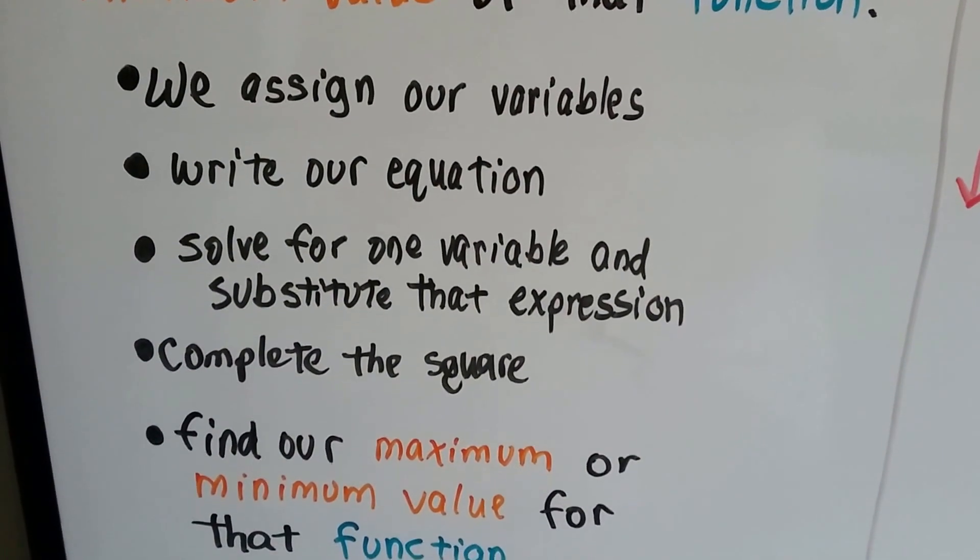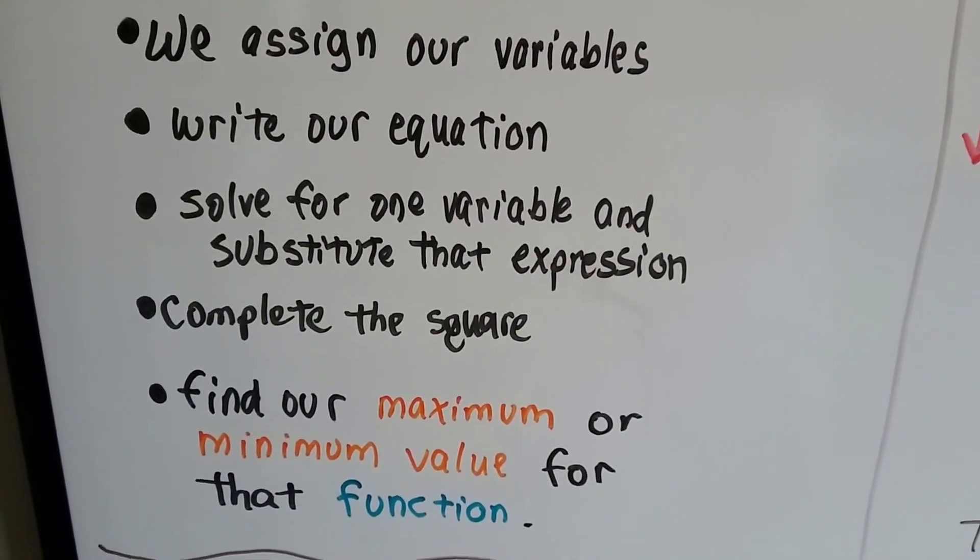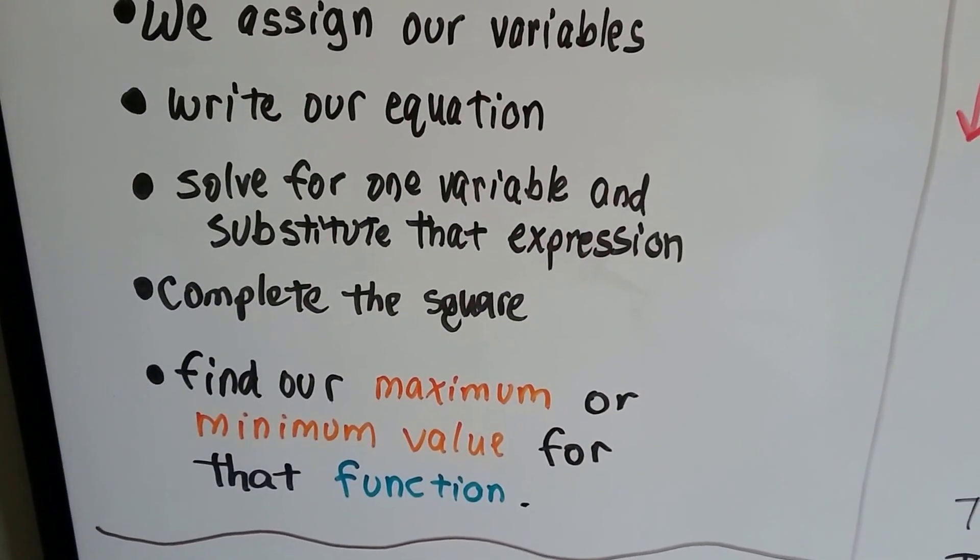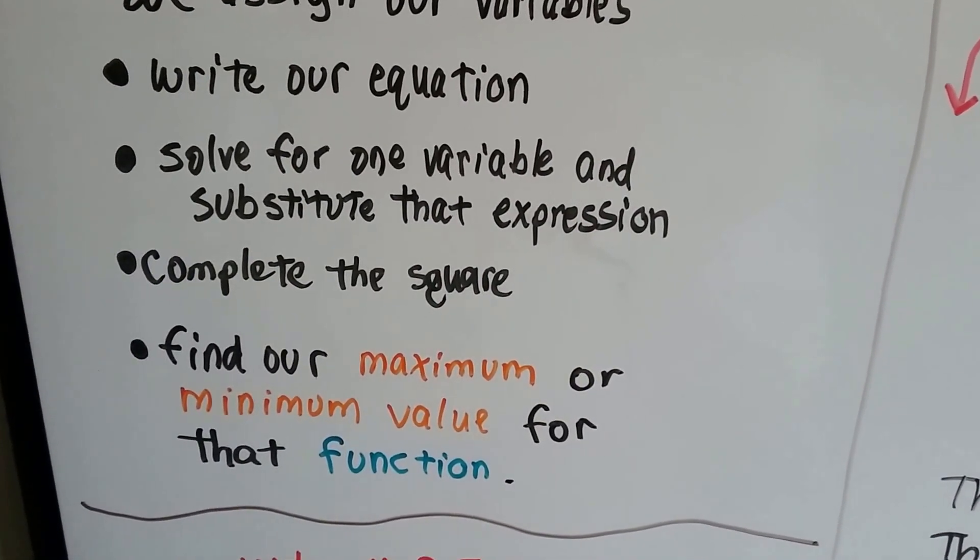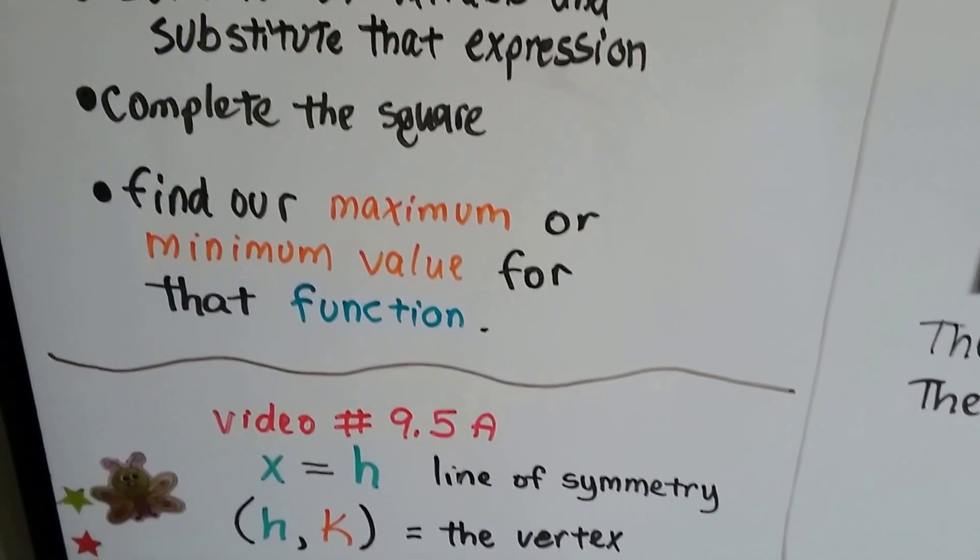We assign our variables, write our equation or function, solve for one variable and substitute that expression, complete the square, and find our minimum or maximum value for that function.